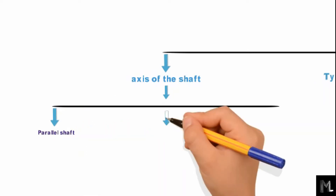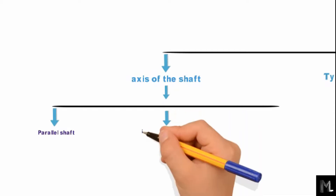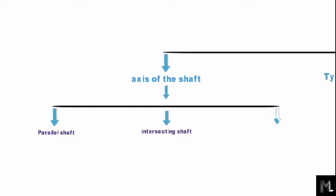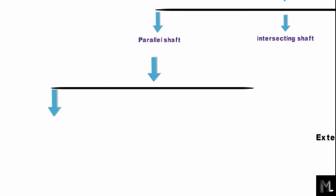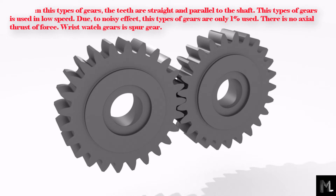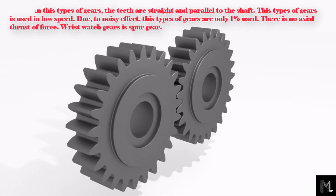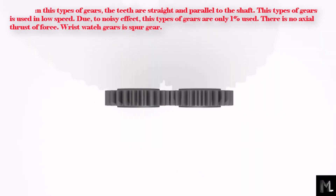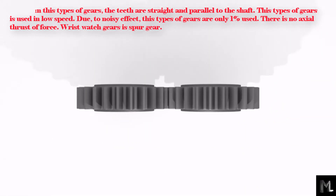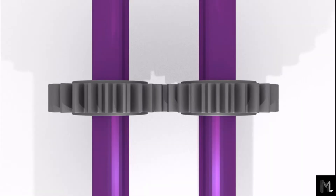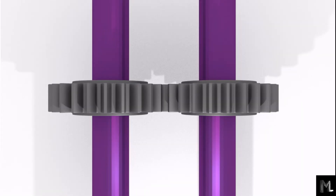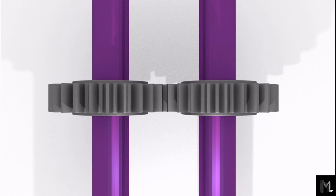On the basis of the angle between the axis of the shaft, gears are classified as: parallel shaft, intersecting shaft, and non-parallel and non-intersecting shaft. Parallel shaft gears are classified into three categories. The first one is spur gear, in which the teeth are straight and parallel to the shaft. This type of gear is used at low speed due to noisy effect, and there is no axial thrust. Wristwatch gears are an example of spur gears, where the shaft of the gear is parallel to each other.